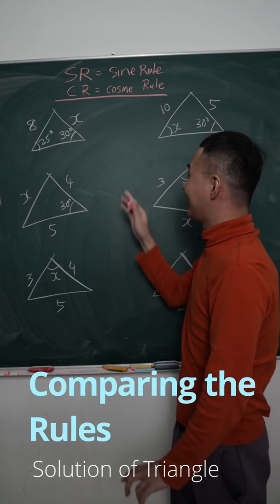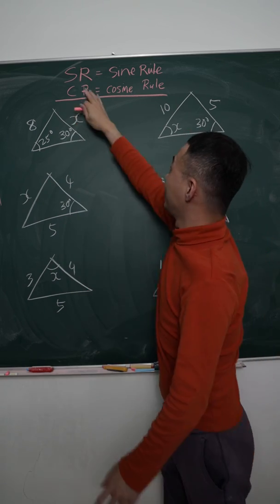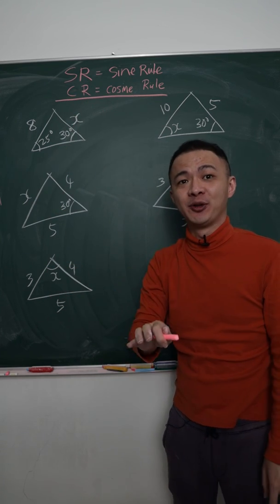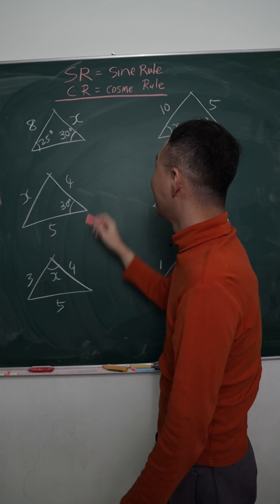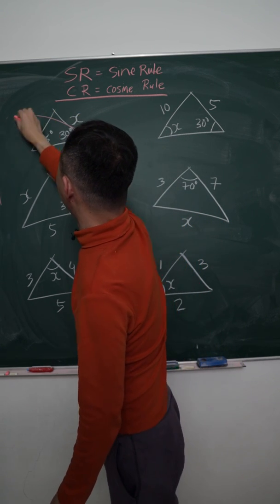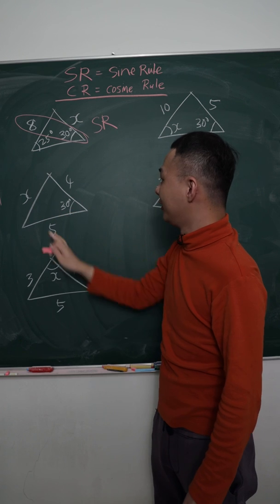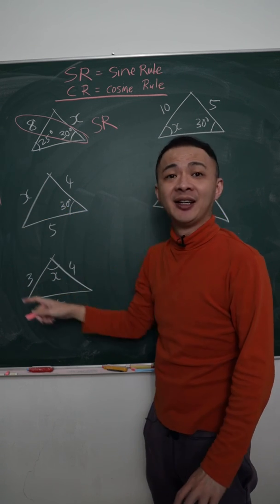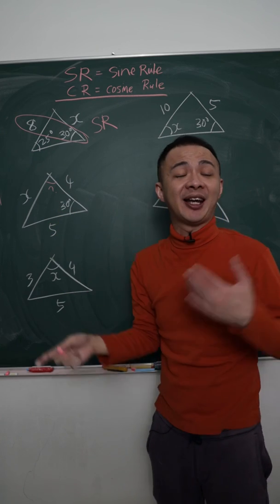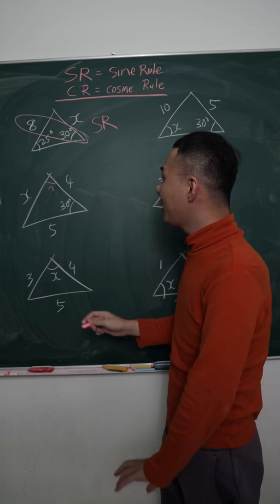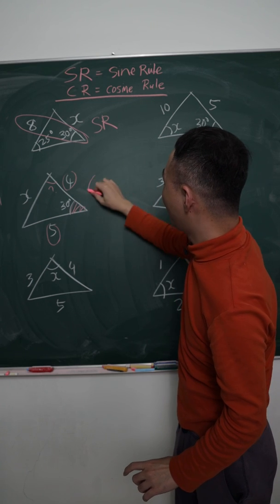Now, how to identify which rule to use for six triangles. SR is sine rule, CR is cosine rule. First triangle: I have one combination — angle and opposite length — so use sine rule. Second triangle: no opposite length for any angle, but I have two sides and one angle between — use cosine rule.